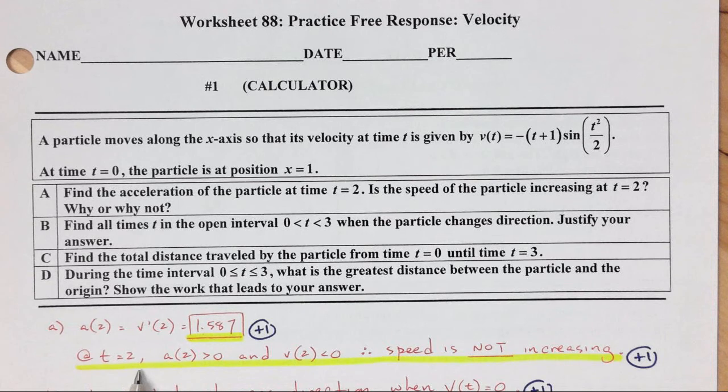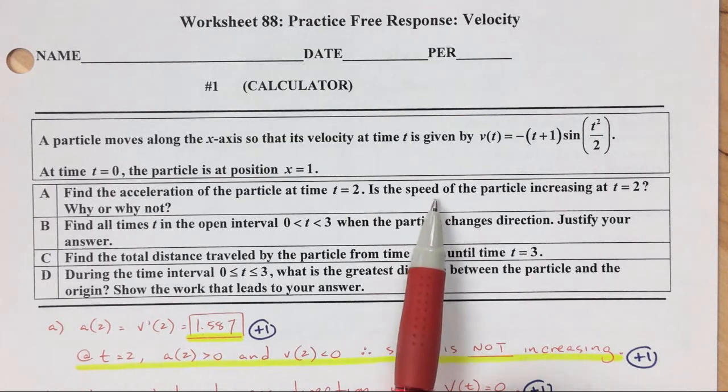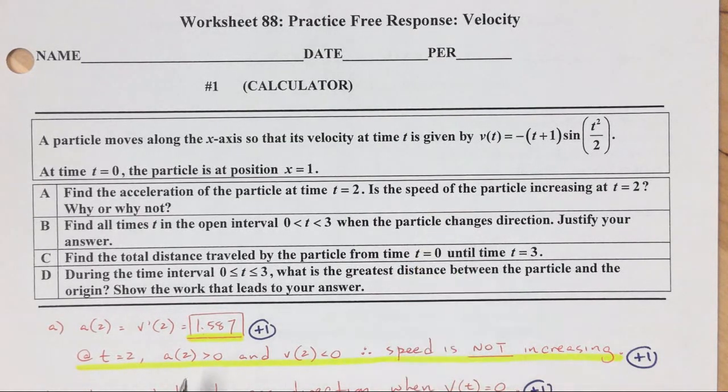So at time equals 2, we want to know if the speed is increasing or decreasing. We want to know if we're speeding up or slowing down. So if you're speeding up versus slowing down, you need to look at acceleration and velocity. Because if they're opposite signs, then you're slowing down. But if they're the same sign, if they're both positive or they're both negative, then you're going to be speeding up.